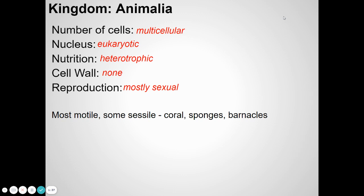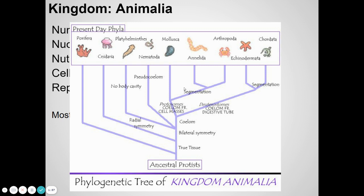Most animals are organisms that move around — the term for that is motile — but there are some that are sessile, meaning they're stuck in one place, like a sponge, barnacles, or coral. They don't really move around. When we look at the animal groups, we'll talk about some of their characteristics. Here are the different phyla of animals.